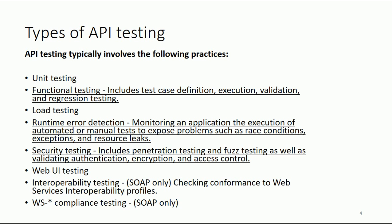One more type of testing is runtime error detection, where the monitoring of application execution — automated or manually — exposes problems such as race conditions, exceptions, and resource leaks. These are possible conditions with APIs that need to be either monitored or detected. For example, a race condition occurs when the same call is going to ask the same request repeatedly to another call. Such scenarios also need to be tested.